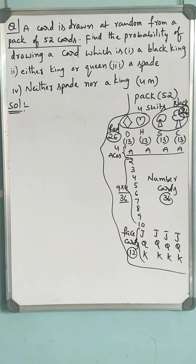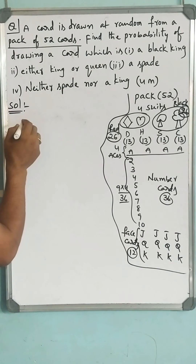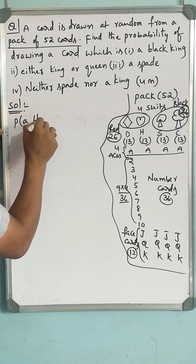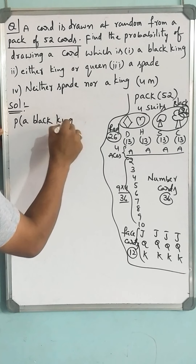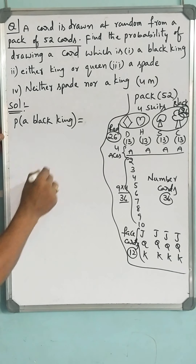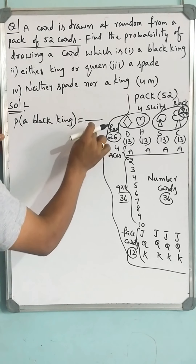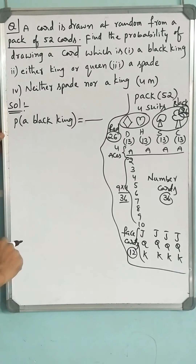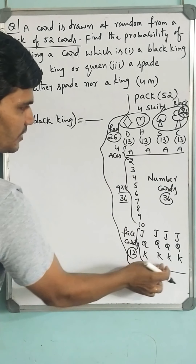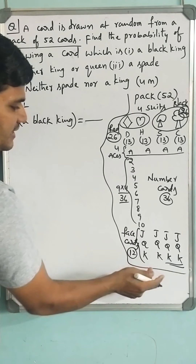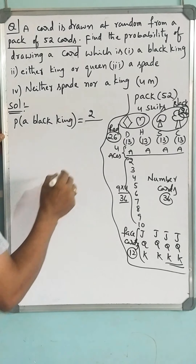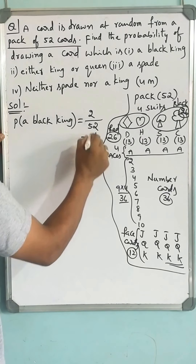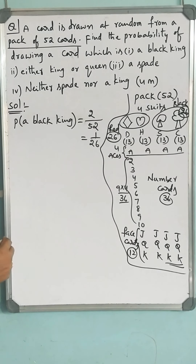Let us go for the questions. Probability of a black king: probability is the number of favourable outcomes divided by total number of outcomes. Number of black kings — among the 4 kings, 2 are black kings and 2 are red kings. So our favourable cards are 2 out of 52. After simplification, its value is 1/26.